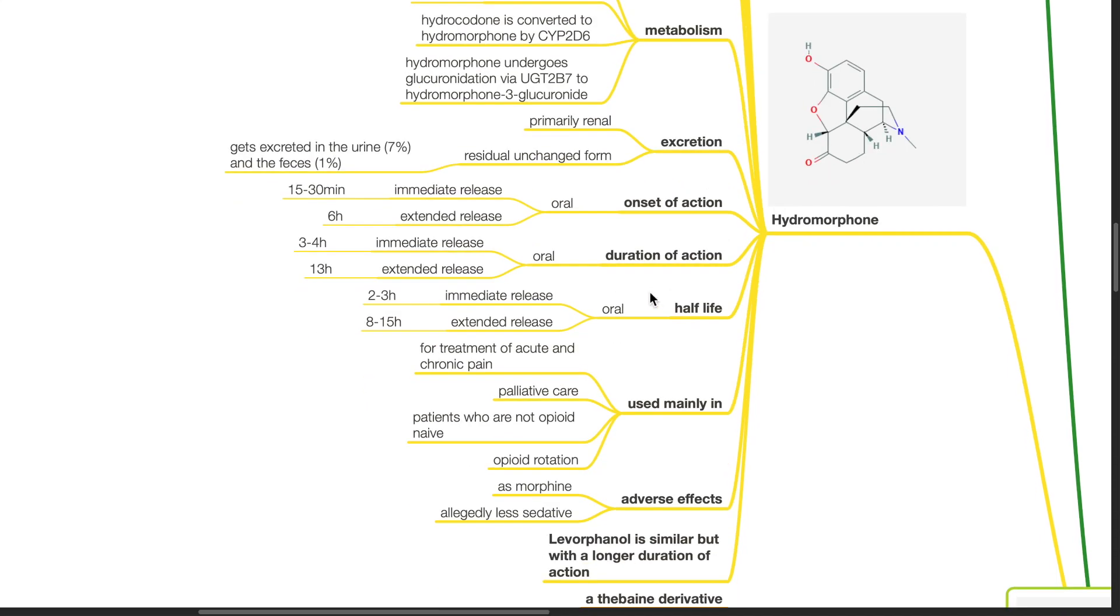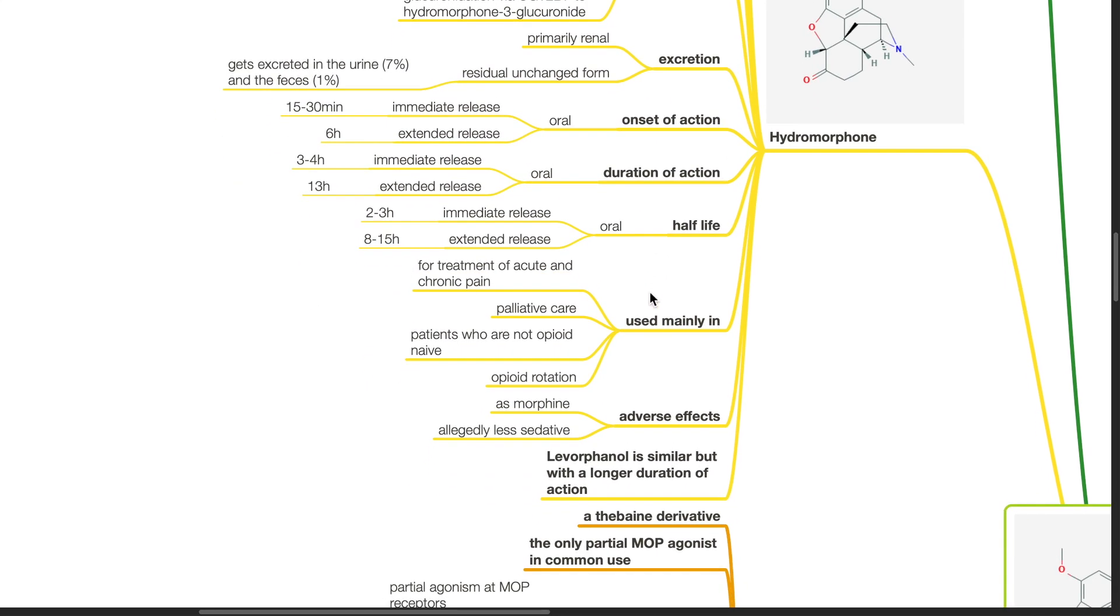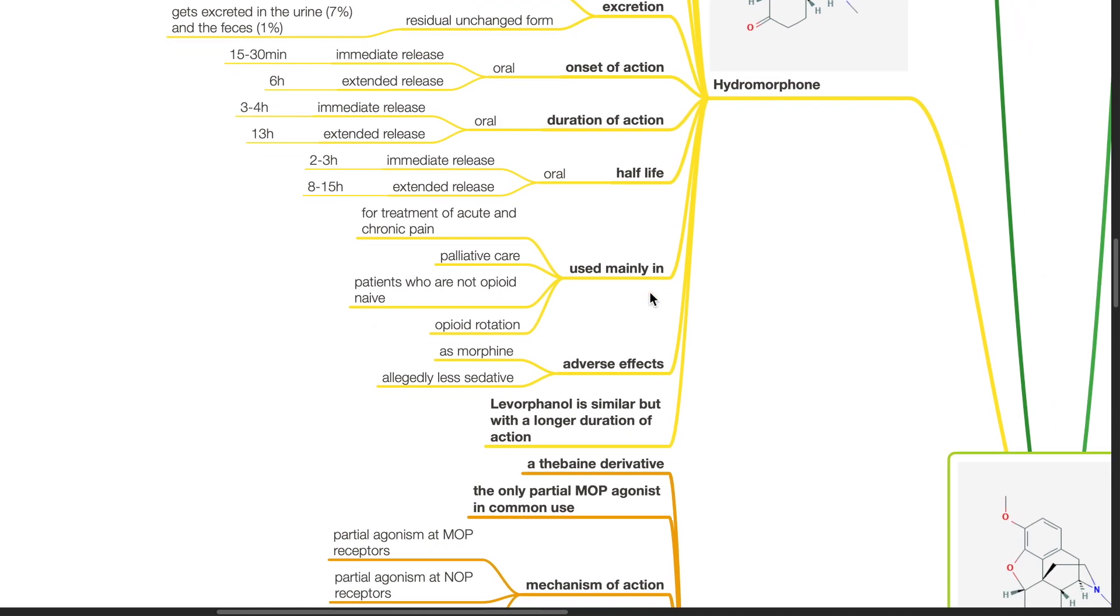Hydromorphone is mainly used for treatment of acute and chronic pain, palliative care, in patients who are not opioid naive, and for opioid rotation. Adverse effects as morphine, it is allegedly less sedative. Dihydromorphinone is similar to hydromorphone but with a longer duration of action.